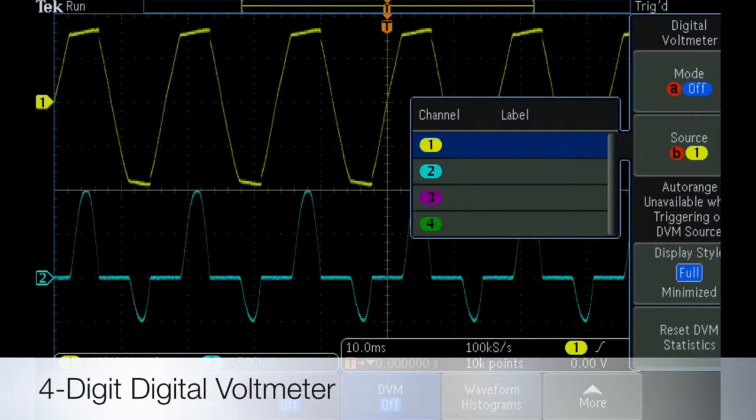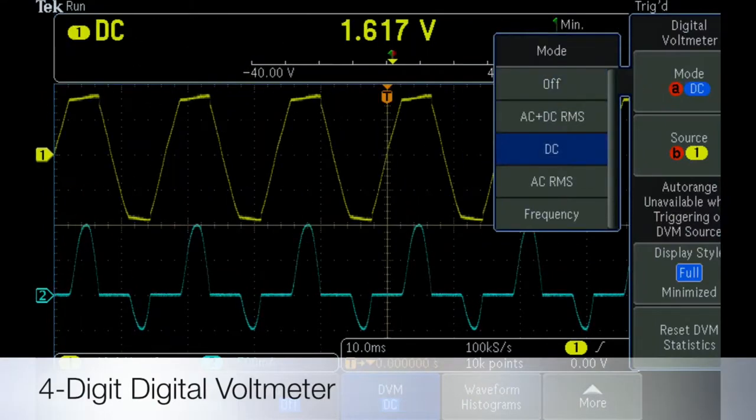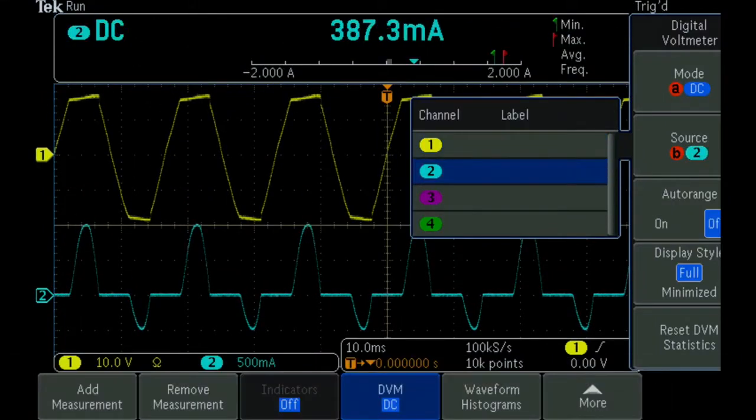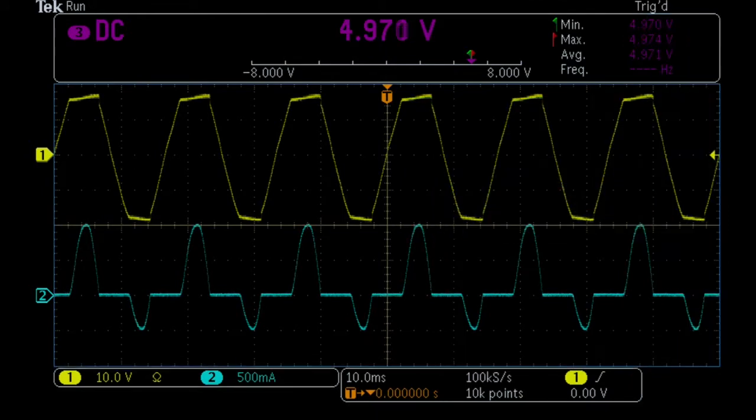We then turn on the MDO3000's integrated four-digit DVM to monitor the DC output voltage as we work. The graphical readout indicates the output voltage is very stable.